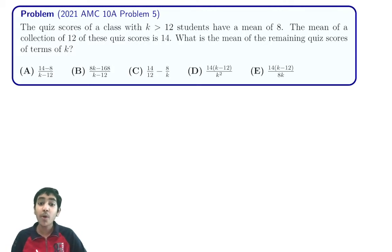We've got a class with more than 12 students. Since we have k students in the class, k is greater than or equal to 12. This means there's k students in the class and k is more than 12, so there's more than 12 students in the class and they have a mean of 8.